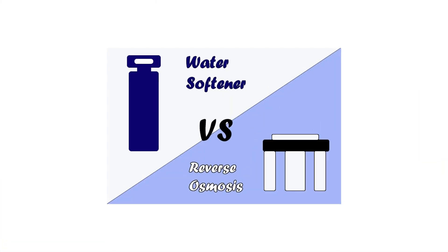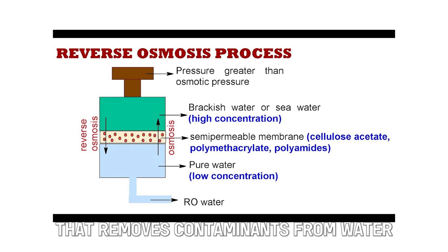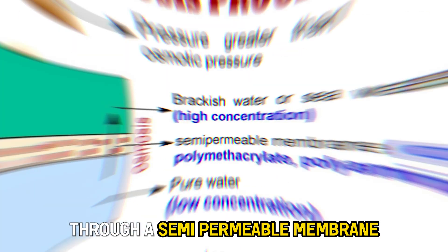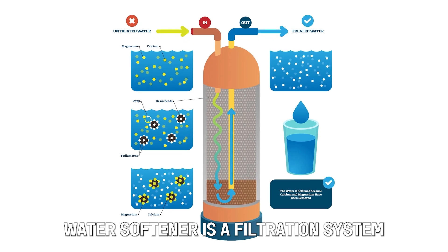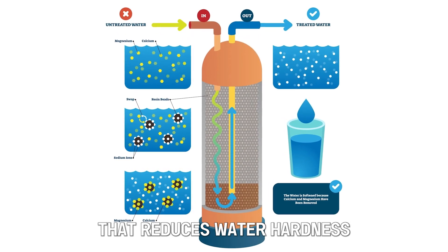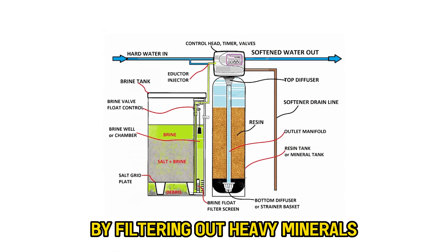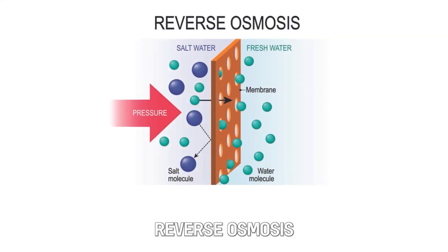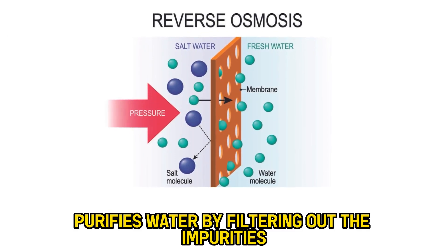The main difference between them is the function. Reverse osmosis is a water purification process that removes contaminants from water through a semi-permeable membrane. In contrast, a water softener is a filtration system that reduces water hardness by filtering out heavy minerals, such as calcium and magnesium. Reverse osmosis purifies water by filtering out the impurities.